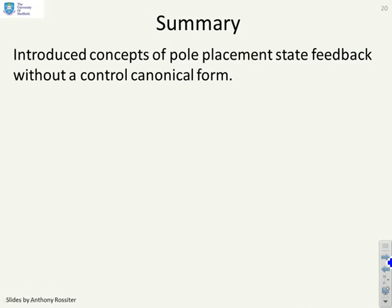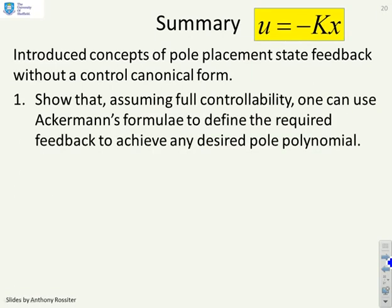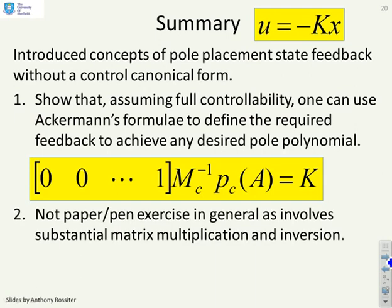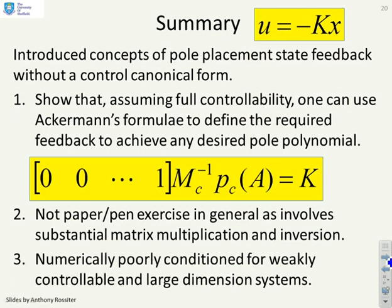In summary, we introduced pole placement state feedback when you do not have a control canonical form. Assuming full controllability, you can use Ackermann's formula to find the required feedback to achieve any desired pole polynomial: take [0, ..., 1] times the inverse of the controllability matrix times PC of A, and the bottom row gives you the state feedback k. In general, this is not a paper-and-pen exercise as it involves substantial matrix multiplication and inversion. A warning: it can be numerically poorly conditioned if your controllability matrix is poorly conditioned or if you have a large-dimensional system.